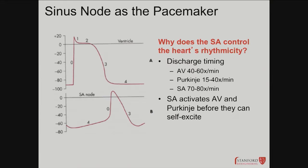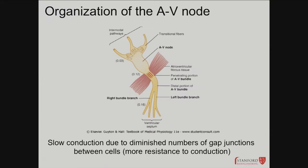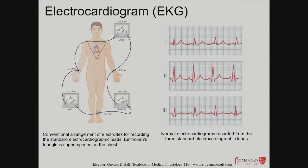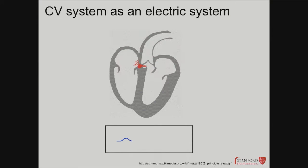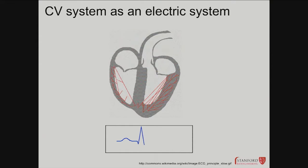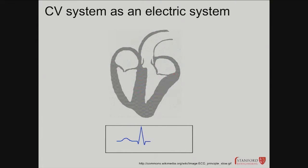The AV node naturally has a slower intrinsic firing frequency than the SA node because it has fewer gap junctions — gap junctions being the holes that allow ions to exchange between cells. This is just a picture showing how an EKG is taken — I wouldn't focus too much on that, it's fairly advanced. And here is a pictorial representation of signal transmission: the red lines show electrical signals and the blue line shows how those signals contribute to the EKG waveform.